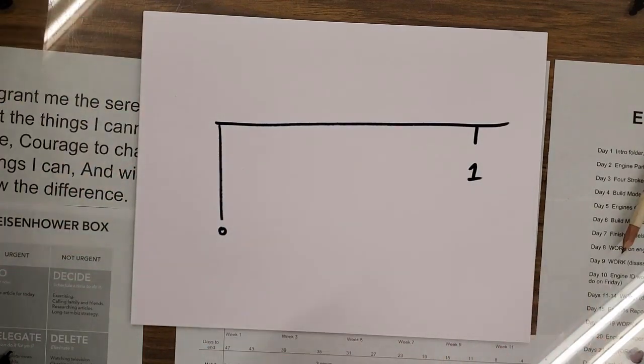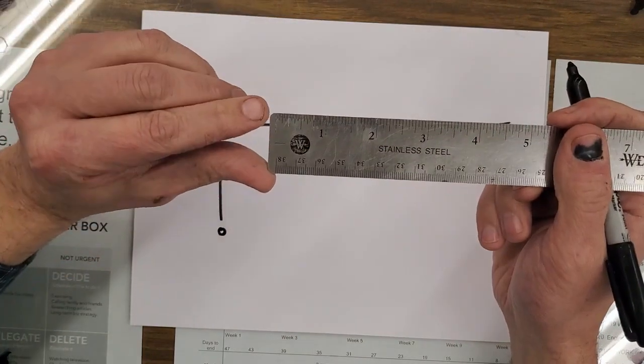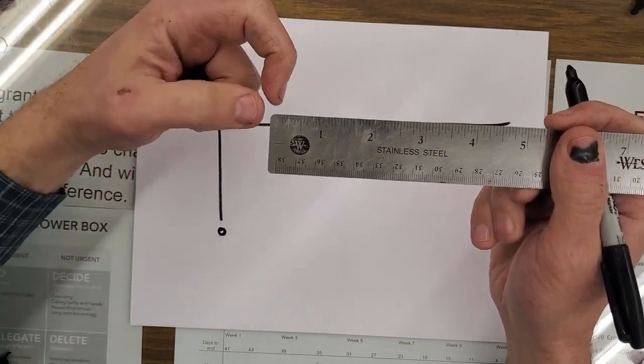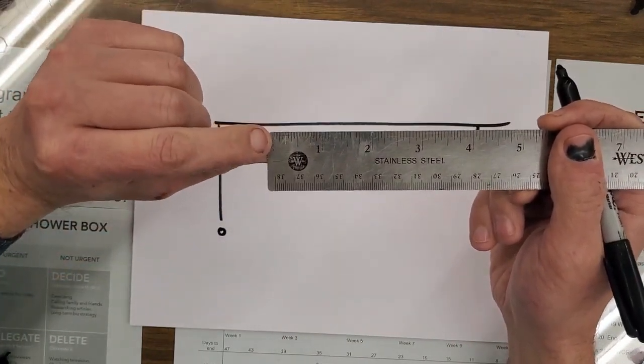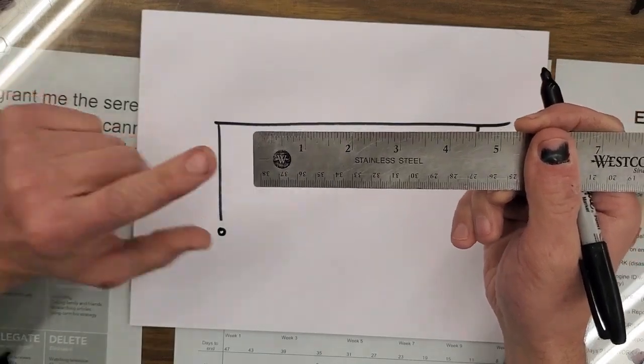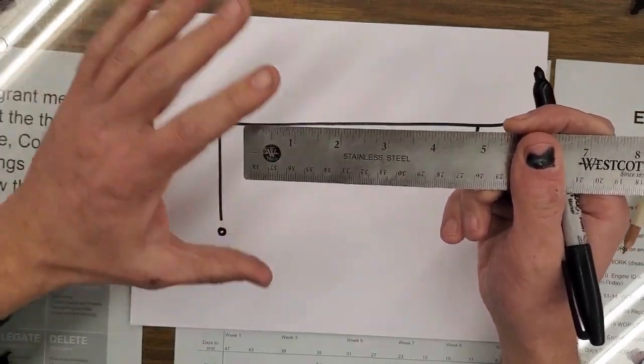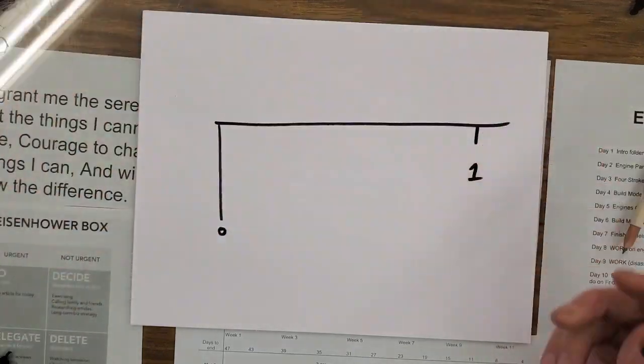Not all rulers end at zero. The rulers we use actually have a little extra here so zero is actually right there at that first tick mark. So you've got to be careful and check that with whatever measuring device you're using.